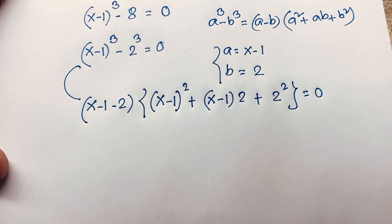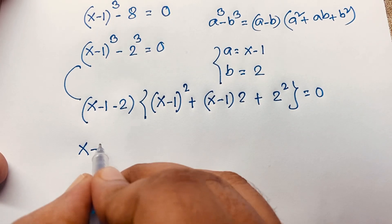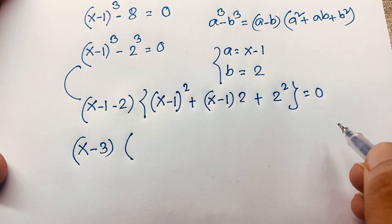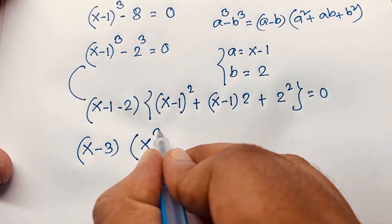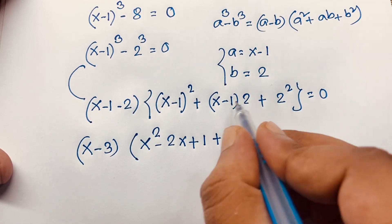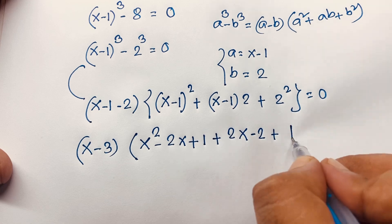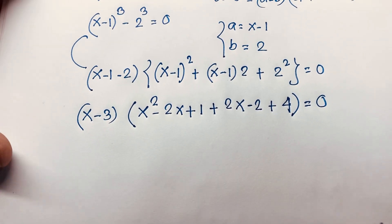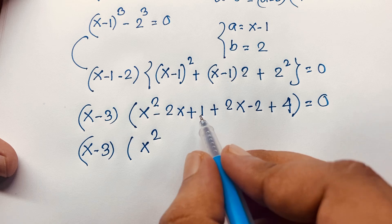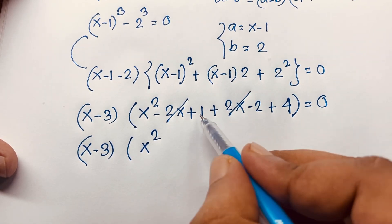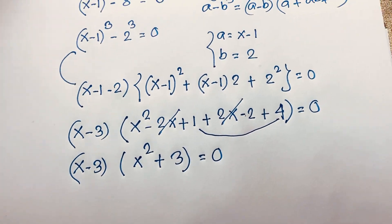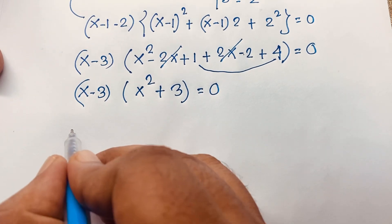Simplifying: the first factor is (x minus 3). For the second factor, expanding (x minus 1)² using a² minus 2ab + b² gives x² minus 2x plus 1, plus 2(x minus 1) which is 2x minus 2, plus 4. The 2x terms cancel: we get x² plus 1 minus 2 plus 4, which is x² plus 3, equal to 0.